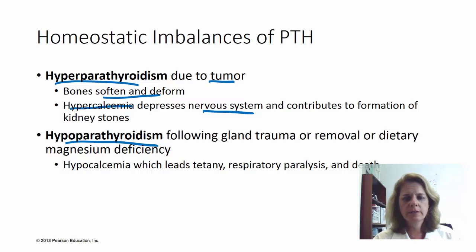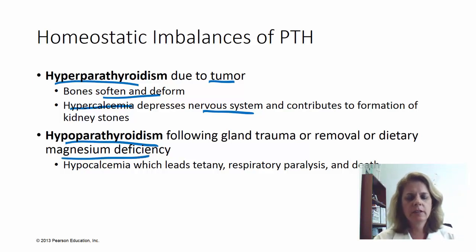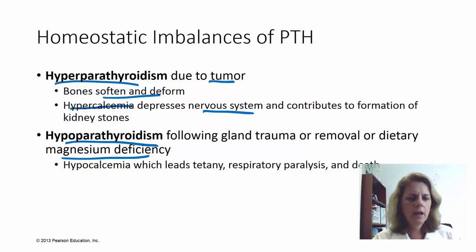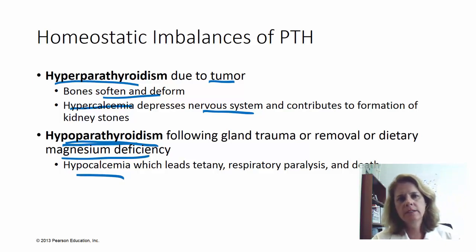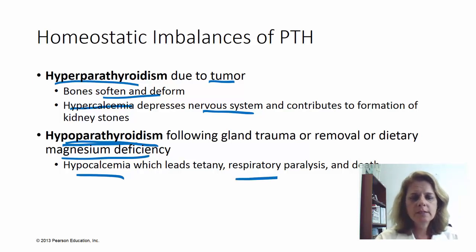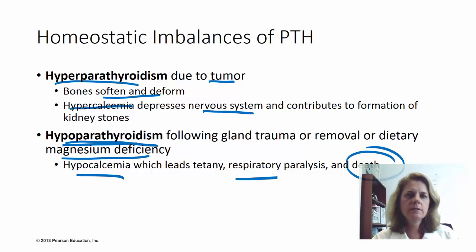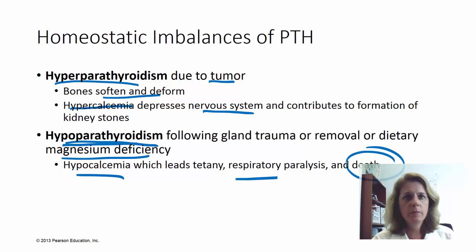Hypoparathyroidism can result from gland trauma — perhaps you've removed the thyroid gland and taken the parathyroid with it, or from a neck injury. Even a dietary magnesium deficiency has been found to affect the function of the parathyroid gland. With hypoparathyroidism, the result is hypocalcemia, which tends to lead to tetany — contracted muscles that won't relax — respiratory paralysis, and even death. It is an important hormone because calcium plays such a role in our nervous and muscular systems.